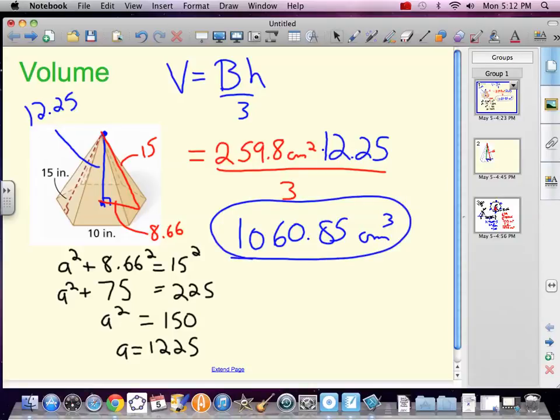Yeah, we had to do a little Pythagorean theorem and trig. They're not going to give you every single number. Now if you design these things, you cannot randomly pick the 10, the 15, and the 12 and a quarter. You can pick two of those, but that third one has got to be a certain size because of Pythagorean theorem and trig.